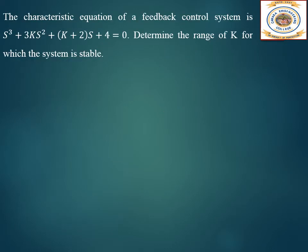The next question: the characteristic equation of a feedback control system is s³ + 3ks² + (k+2)s + 4 = 0. We have to determine the range of k for which the system is stable.